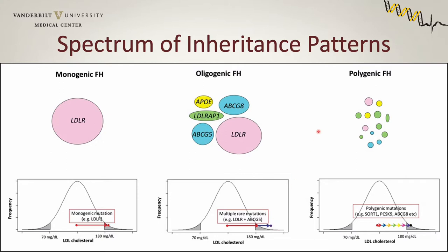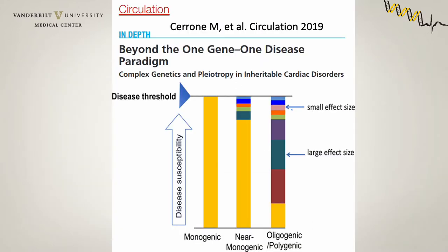There's no discrete cutoff between oligogenic and polygenic — we just think of a relatively small number for oligogenic and a relatively large number for polygenic. Here's another illustration more focused on inheritable cardiac disorders, from a Circulation paper from Marina Cerrone et al. We tend to think of our diseases as monogenic, meaning one variant with a strong genetic effect is enough to reach disease threshold, and then we have the oligogenic and polygenic examples where a few variants with relatively large or small effect sizes in combination reach disease threshold.